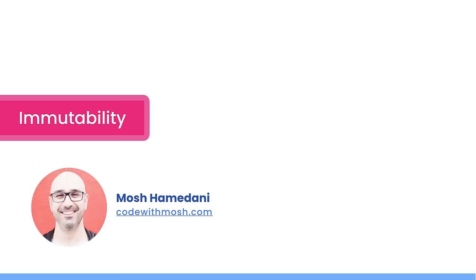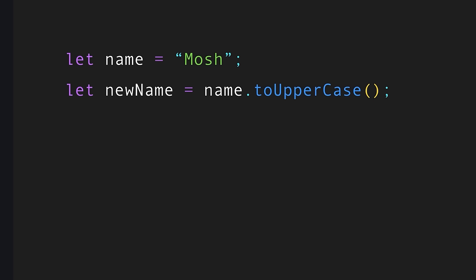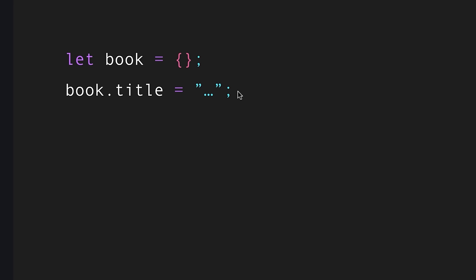A concept that goes hand in hand with pure functions is immutability — once we create an object, we cannot change or mutate it. If you want to change it, take a copy first and then change the copy. For example, strings in JavaScript are immutable: converting a string to uppercase gives you a new string, the original is not affected. In contrast, objects can be mutated directly. That's why I said JavaScript is not a pure functional programming language. In pure functional languages we cannot mutate data at all, but in JavaScript we can apply functional programming principles even though it's a multi-paradigm language.